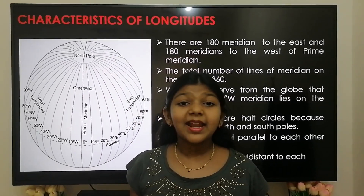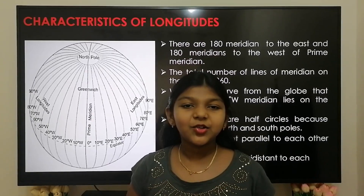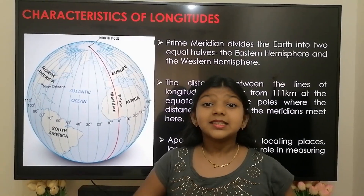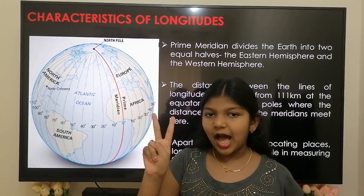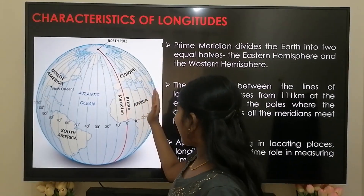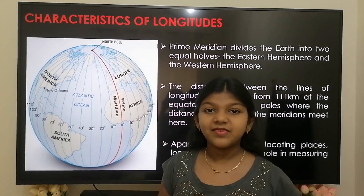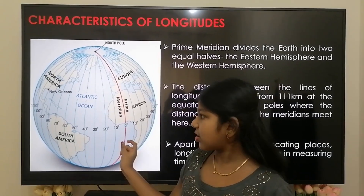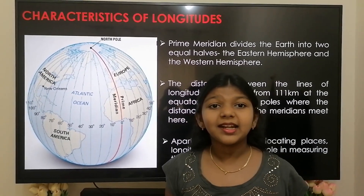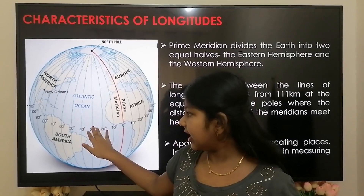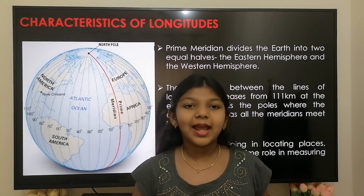Meridians are not parallel to each other like latitudes, but they are equidistant to each other. The prime meridian divides the earth into two equal halves: the eastern hemisphere and the western hemisphere. The distance between the lines of longitude decreases from 111 km at the equator towards the pole.